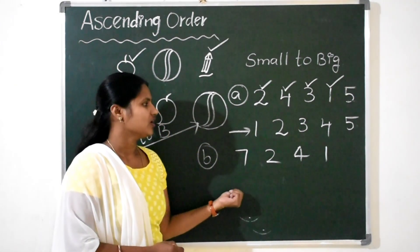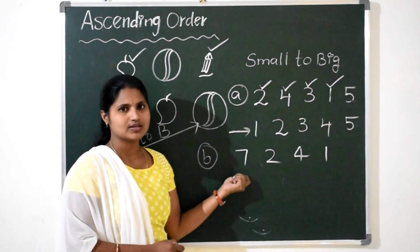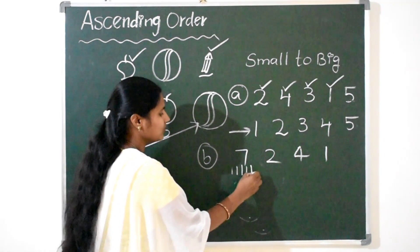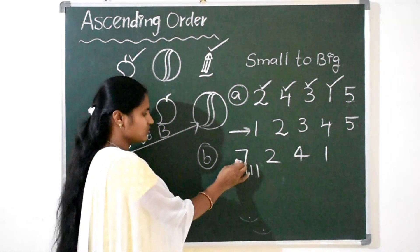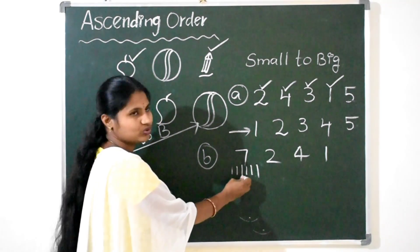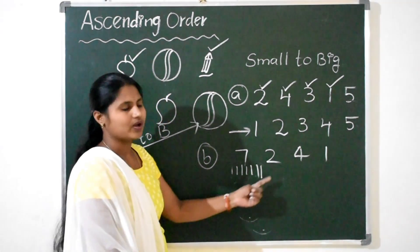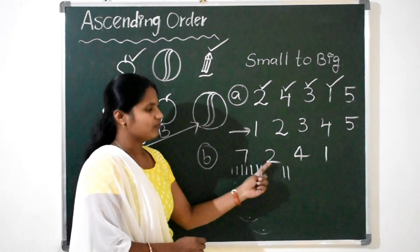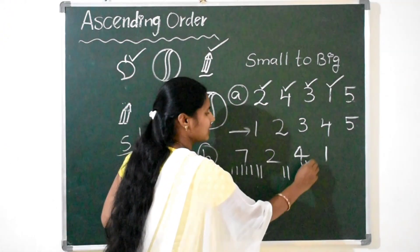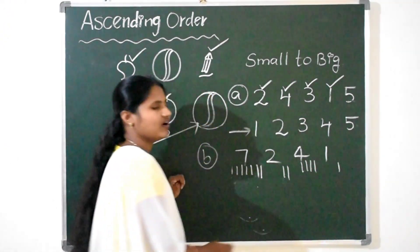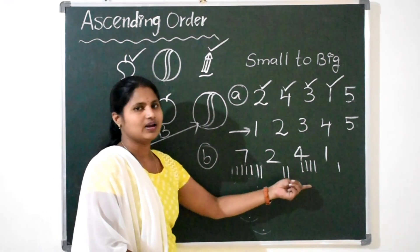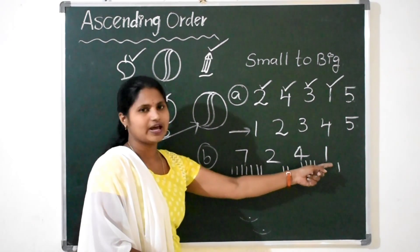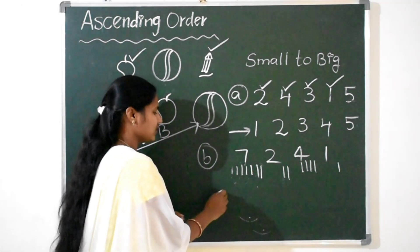If you are confused about which is the smallest number, just draw lines below the number. Here the number is 7, so draw 7 lines: 1, 2, 3, 4, 5, 6, 7. Number 2 has 2 lines. Number 4 has 4 lines. Number 1 has 1 line. Now compare all lines — which is having the least lines? Number 1 is having the least lines, so 1 comes first.